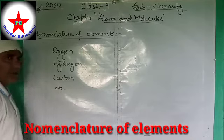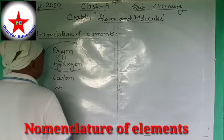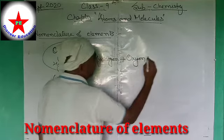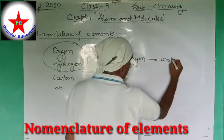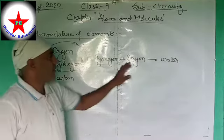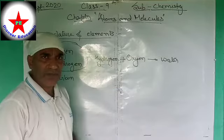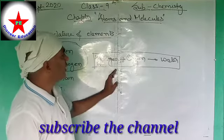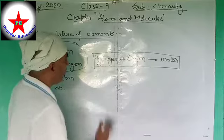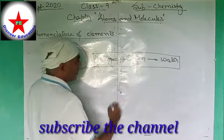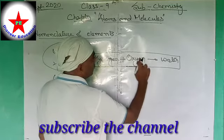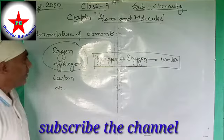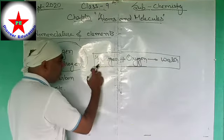Now if we go for a chemical reaction, let us take the example: hydrogen plus oxygen gives the formation of water. Now, do you think it is convenient every time to write the complete names — hydrogen plus oxygen forms water? Is it convenient to write 'hydrogen' plus 'oxygen' equals 'water' every time? Definitely no, it is not convenient.